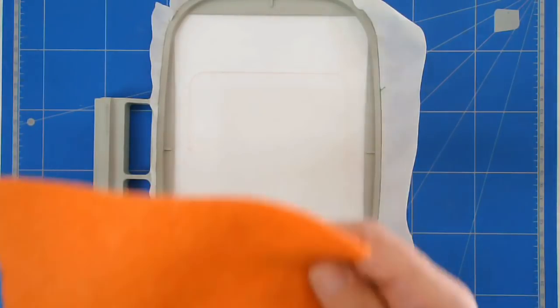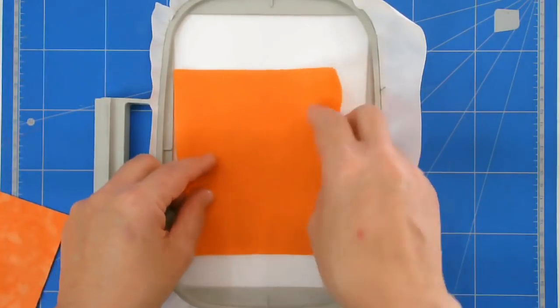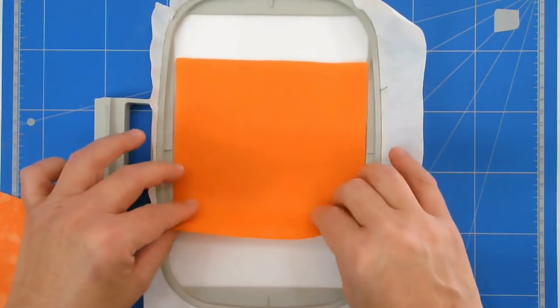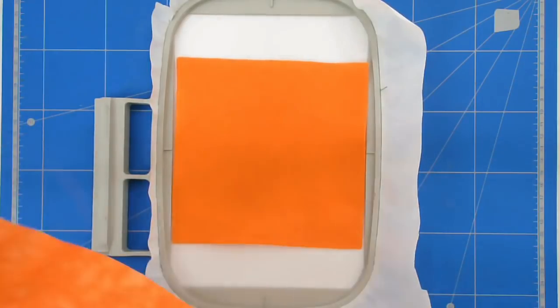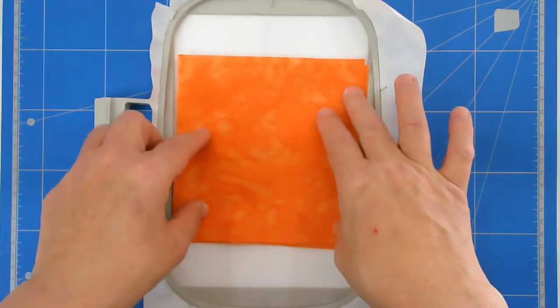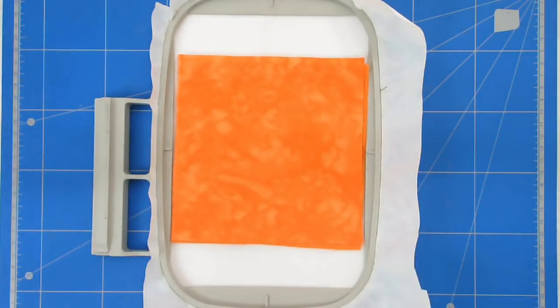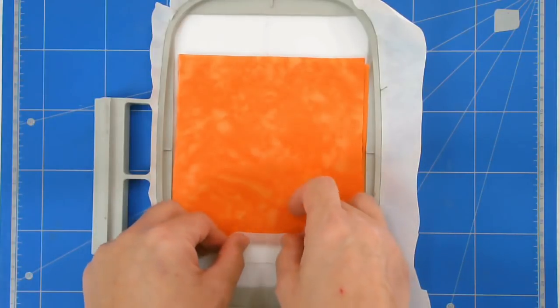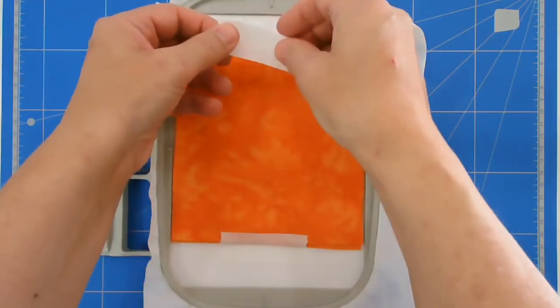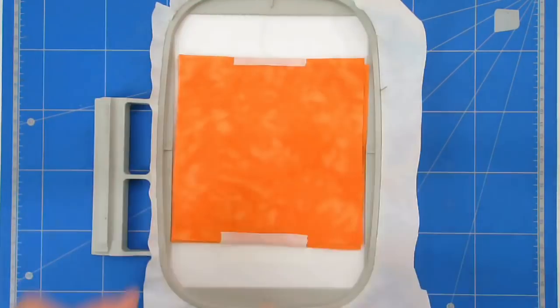Next I'm going to lay my batting, in this case felt, over the top making sure that I cover all the outline and then I'm going to place my background fabric over the top of that. I'm going to use a little piece of tape just to hold it in place so that it doesn't move while it's being stitched. I'm now going to pop that back in my machine and stitch round number two which is going to stitch that down.